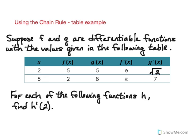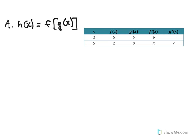In each of the following problems — there are three problems we're going to look at — we're going to be asked to find h prime of 2 specifically. So keep that in mind. The first one we're asked to do is when the function h is defined to be the composite function f composed with g, that is, f of g of x. Because it's a composite function, finding the derivative of h is going to require us to use the chain rule.